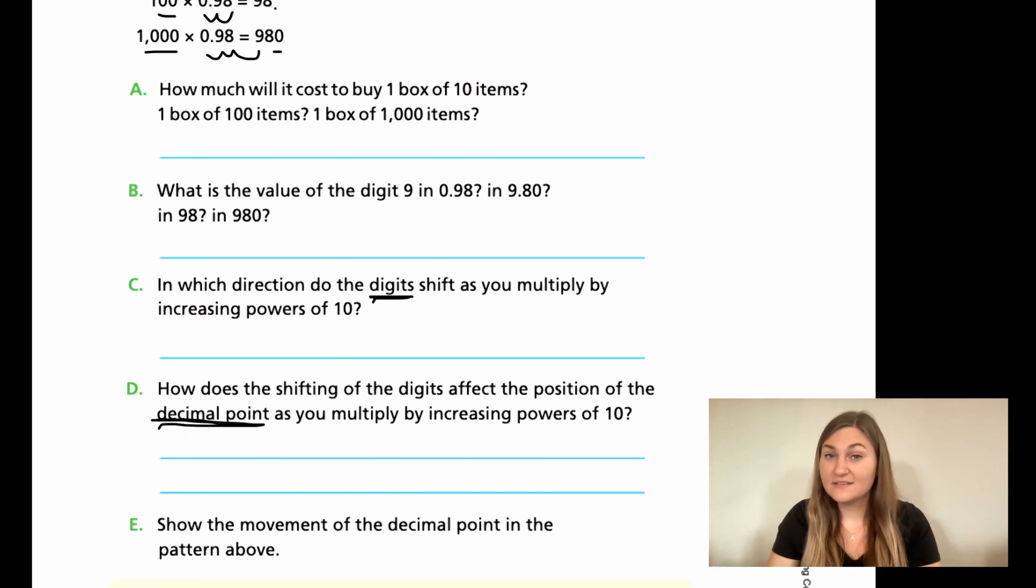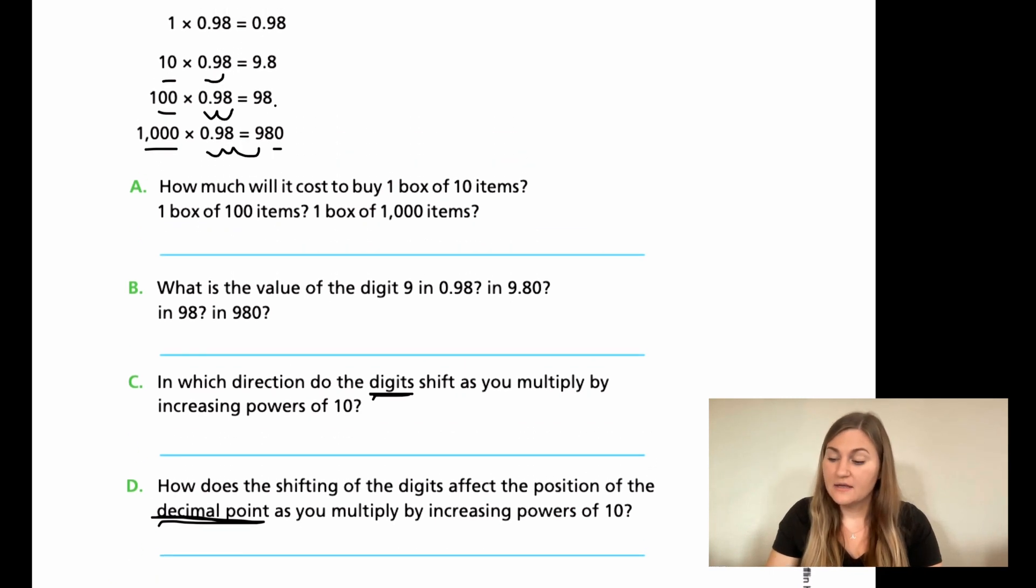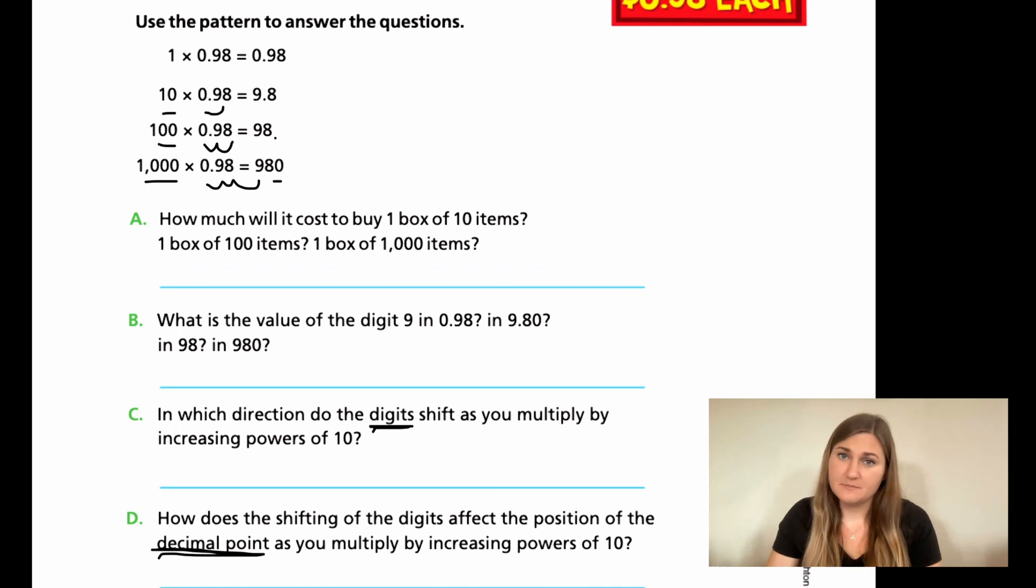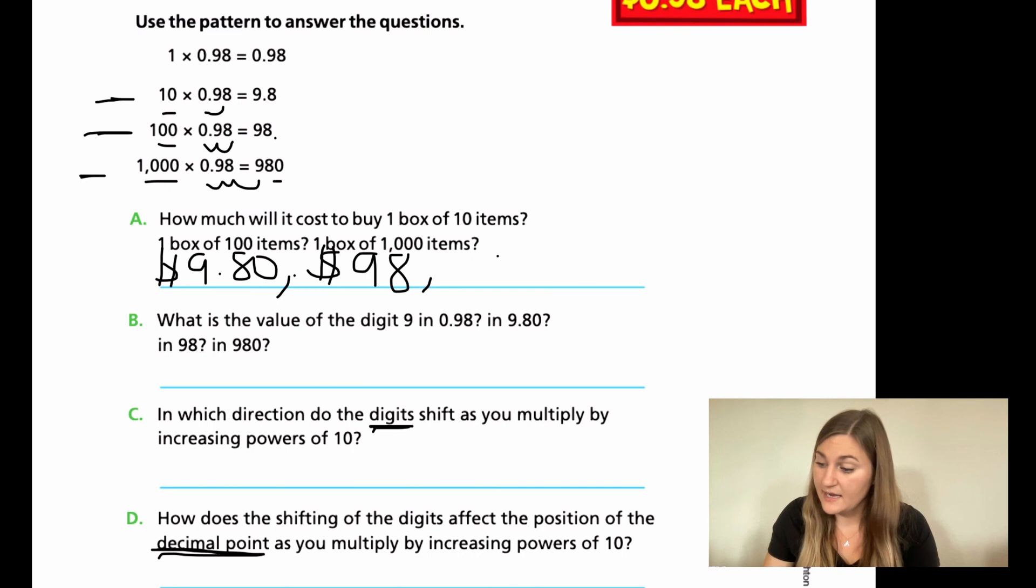Alright, let's go ahead and solve these together. So we're writing what it gives us just as money. So one box of 10 items, that's the second one right here. That's going to be $9.80. The second one of a hundred items is here. That's going to be $98. And then the third one for a thousand items, that one's $980.